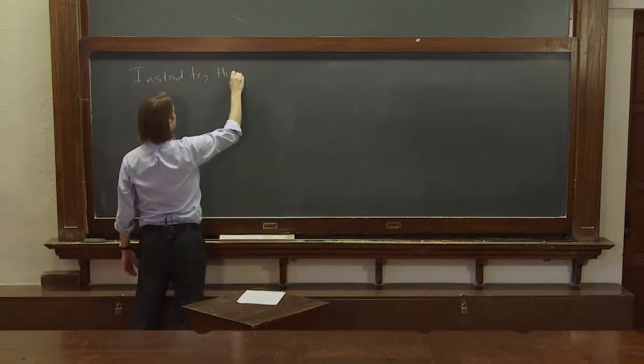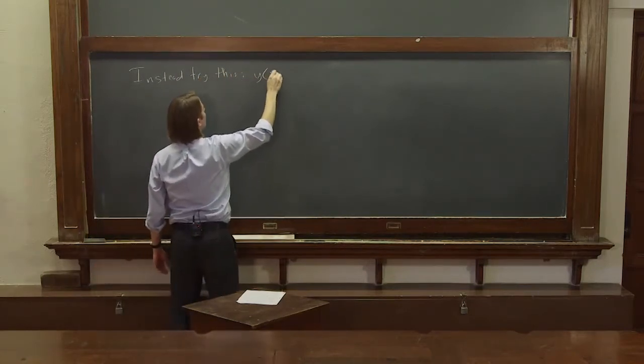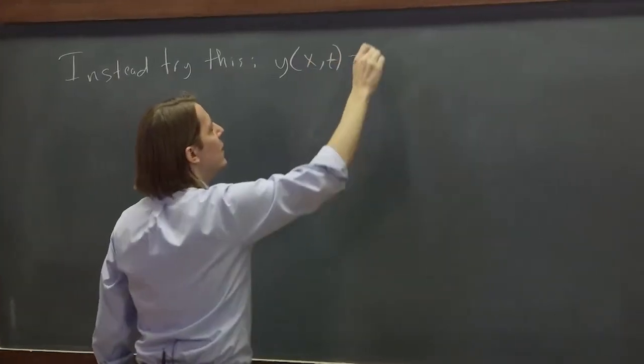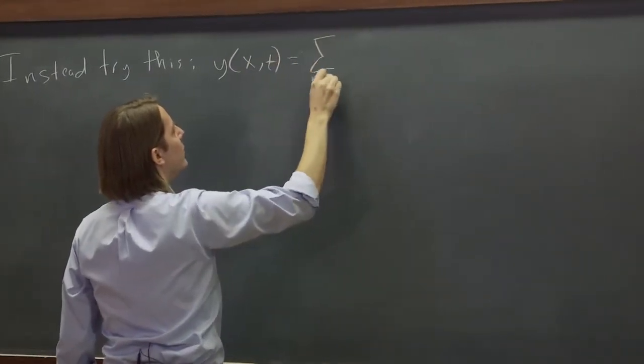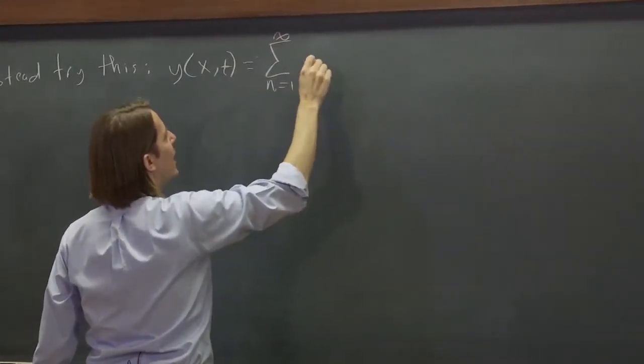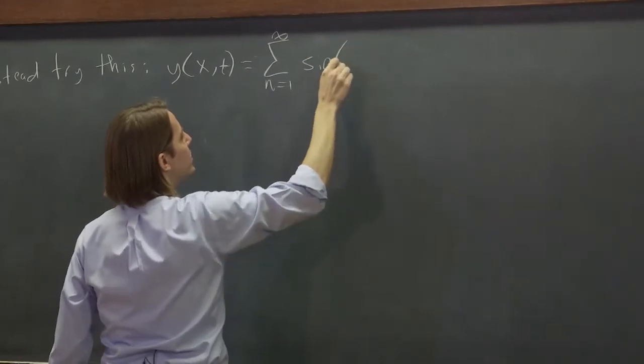Instead, try this: y(x,t), again, a sum from 1 to infinity. And this time, I'm going to leave out the a_n on purpose. We're going to say we're going to add up a bunch of sinusoidal shapes.